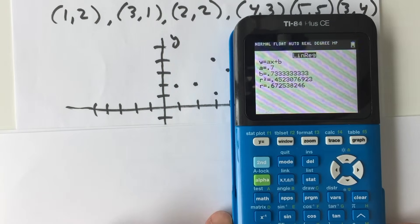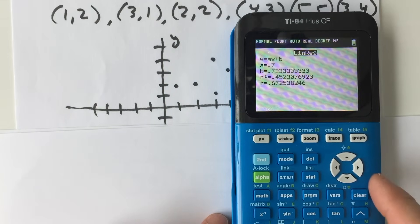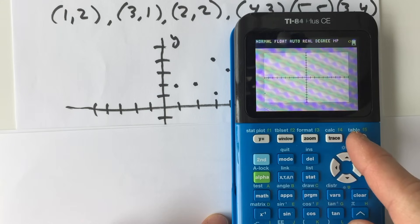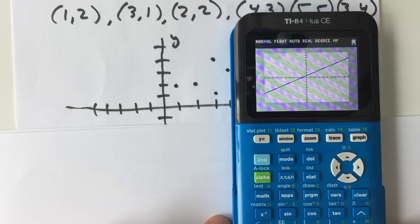So now the next thing we're going to do is we're going to go over to graph, and you can see there's our line, and let's go ahead and take a look at where our points are.